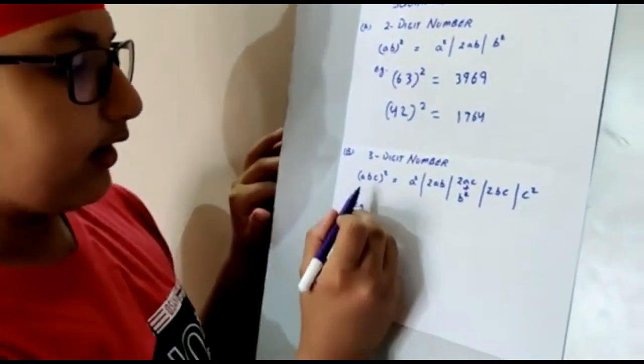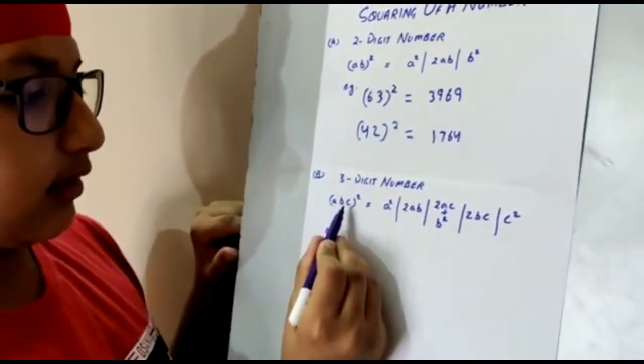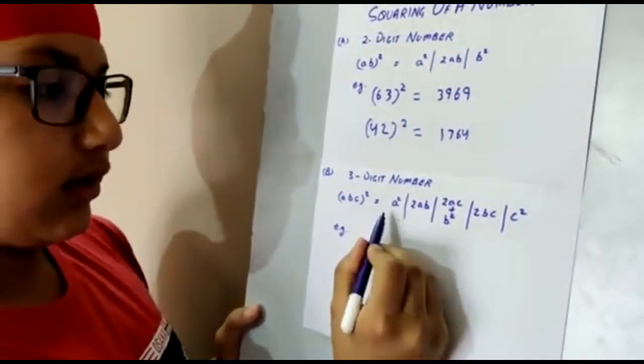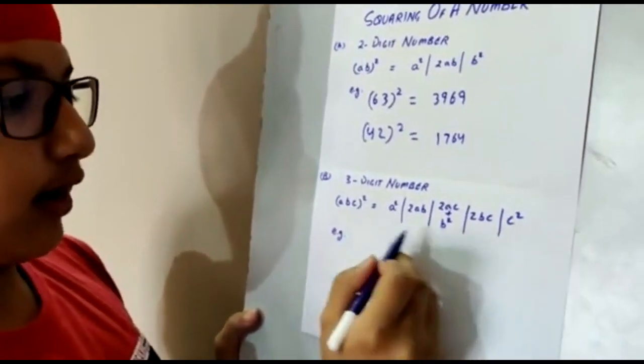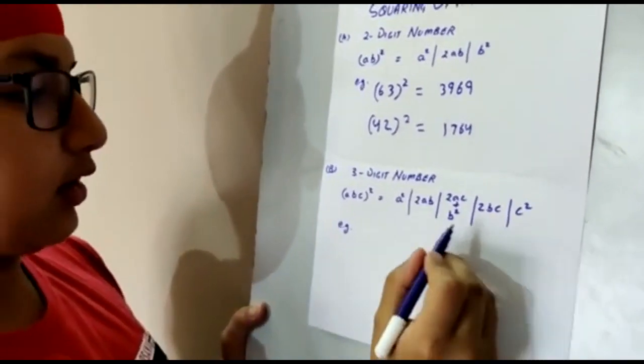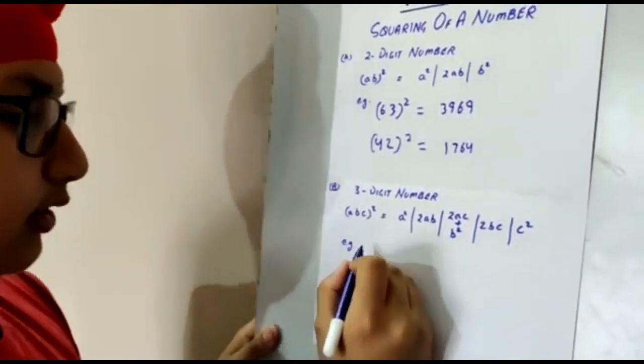Now let us find a square of a three-digit number. Let's assume ABC as a number. These are 5 easy steps to find the square of ABC. Now let us take some examples.